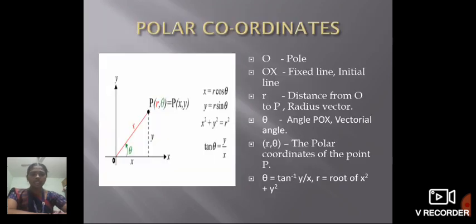First is polar coordinates. In this diagram, you see the pole O and the point P. The distance between O and P is mentioned as R, the radius vector, and the vectorial angle is denoted by theta. The polar coordinate at the point P is (R, theta), which is equal to the Cartesian coordinate (X, Y). To change Cartesian coordinates into polar coordinates, we substitute X equal to R cos theta, Y equal to R sin theta. By the Pythagorean theorem, R square equal to X square plus Y square, so R equals root of X square plus Y square. To find theta, we take tan theta equal to Y by X, then theta equal to tan inverse of Y by X.